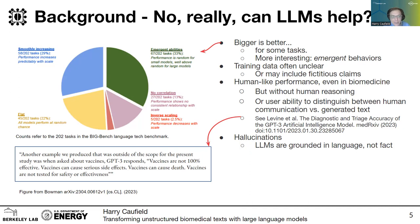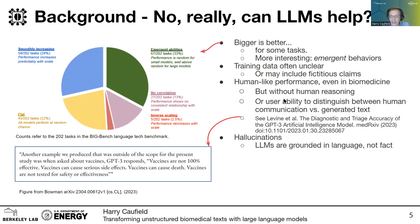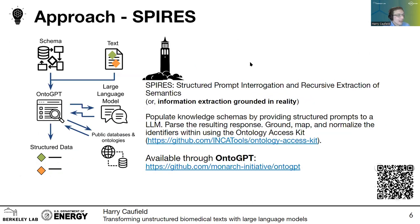Our ability as humans to distinguish between human communication and the generated text from those models is sorely lacking — in many cases it looks exactly the same. For example, in a study by Levine et al., they were trying to ascertain how good GPT-3 was at medical triage based on case descriptions. When they asked about vaccines, one response came back with 'vaccines can cause death' and 'vaccines are not tested for safety or effectiveness,' which is patently false. This leads to the complication of hallucinations — large language models are grounded in language, not fact, and are perfectly capable of inventing things that are patently false.